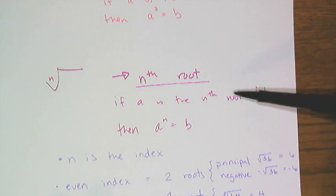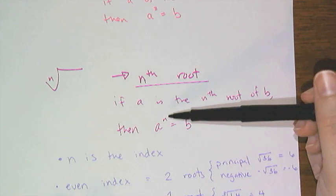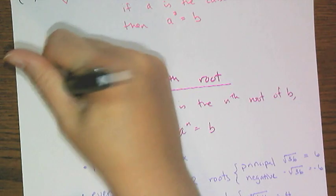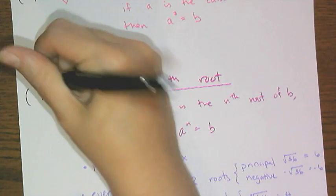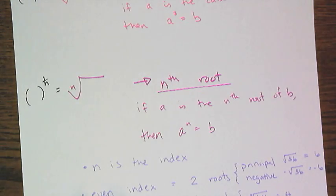It says if a is the nth root of b, then a to the nth power equals b. And if I want to write that in exponential form, I put it to the 1 over n power.